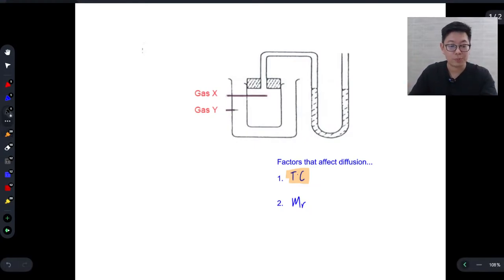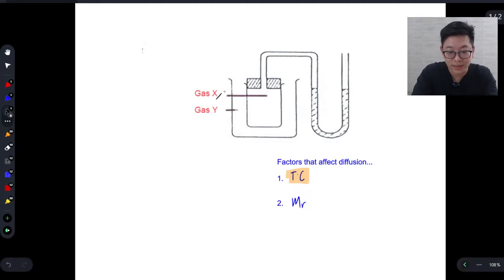Now how do you apply this to solve the porous pot question? Let's assume you have two gases, gas X and gas Y. And let's assume for now that gas X has a smaller MR than Y. So if X has a smaller MR, it will diffuse out of the porous pot much faster than gas Y can diffuse in.